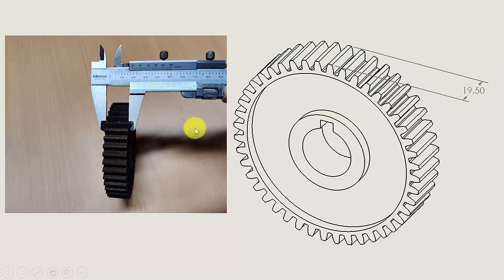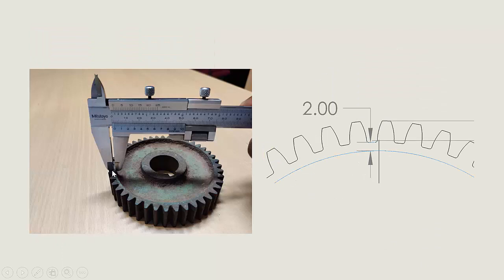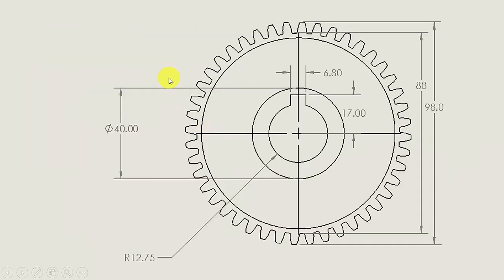The width of the gear is measured as 19.5 mm. This cut section has a thickness of 5 mm. The gap between the root diameter and the inner groove is measured as 2 mm. So here are my dimensions — first create a rough diagram and mark all the dimensions in that.